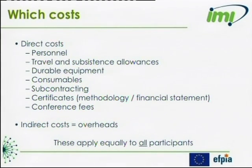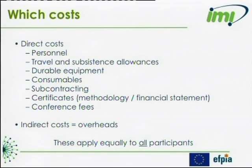Concerning finance and which costs we are referring to: we are referring to direct costs and indirect costs. Among these direct and indirect costs, they may be spent across research activity, management activity, and training activity. These direct costs may be personnel costs allocated to a project, travel and subsistence costs, equipment, consumables, subcontracting costs, costs incurred to provide the different certificates such as cost certificates or certificates for methodology, and also conference fees.